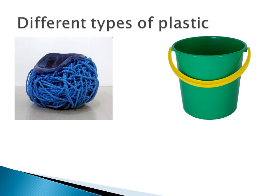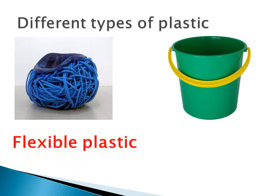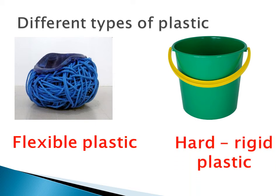Different types of plastic. Look at the first picture and the second picture. This rope is flexible — it's made of plastic, but it's a flexible plastic. But this pail is hard, rigid plastic. Rigid means not flexible. So there are different smaller groups within the same plastic: the rope plastic can be flexible, and the pail can be hard and rigid.